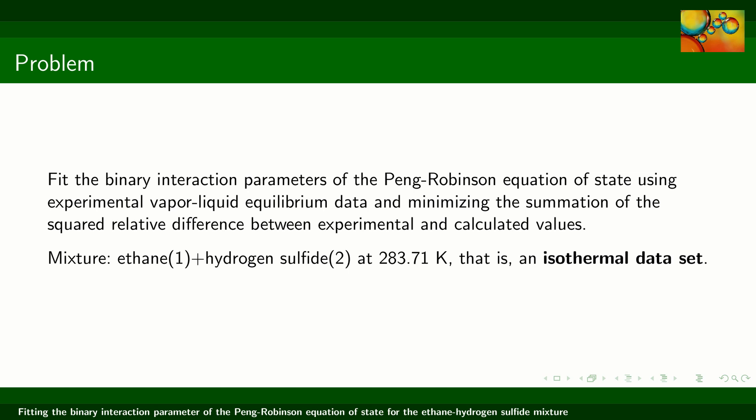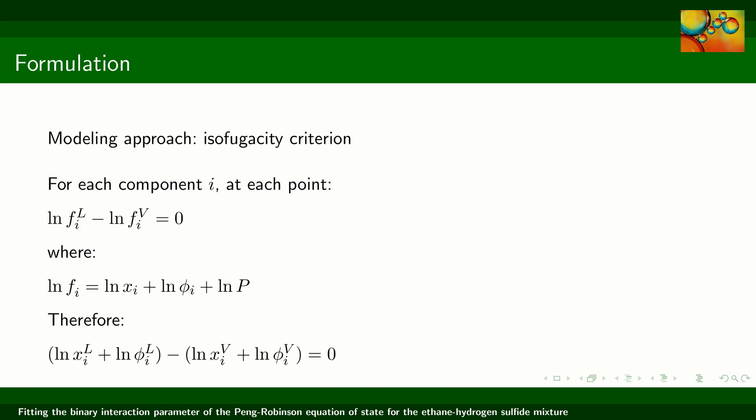The objective function that we will apply in order to minimize the deviations between experimental and calculated results is the summation of the squared relative deviations in pressure. This calculation is subject to constraints which have to do with the fact that the calculated values should satisfy the vapor-liquid equilibrium conditions for both ethane and hydrogen sulfide.